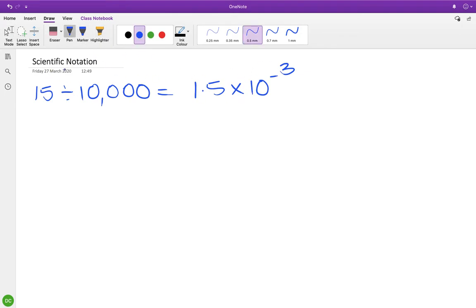Scientific notation, also called standard form, is quite easy to convert to and from regular decimals. To convert this to a regular decimal, multiply by 10^-3, which means you're dividing by 10 three times.